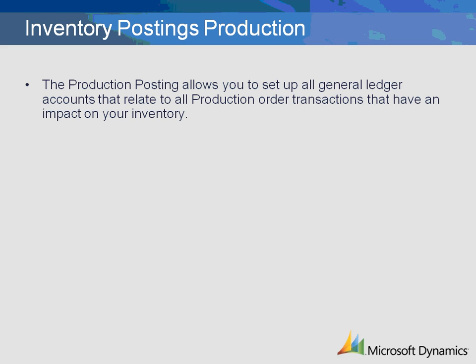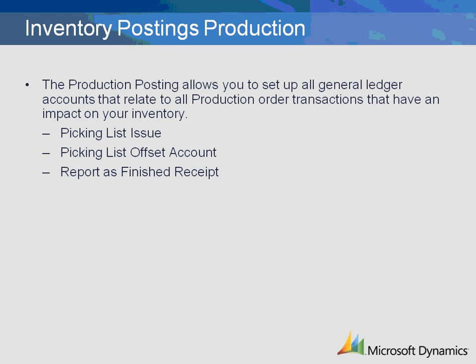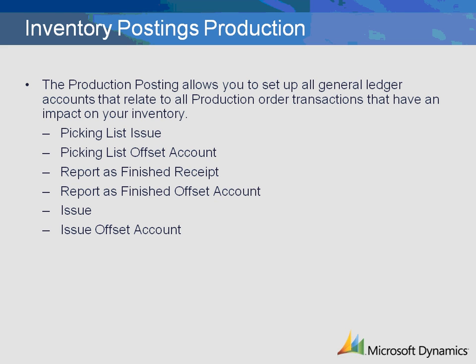Within the Production tab, there are various types of transactions that must be set up if the functionality is going to be used. These include Picking List Issue, Picking List Offset Account, Report as Finished Receipt, Report as Finished Offset Account, Issue, Issue Offset Account, Receipt, and Receipt Offset Account.